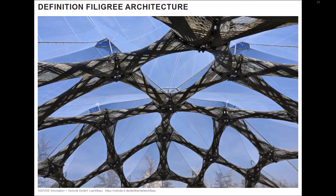The word filigree originally comes from Latin and is composed of the words filum and granum, literally translated as grain wire. In a figurative sense, the term filigree describes a goldsmith's work, which consists of a fine mesh of wire made of gold and silver. In architecture, filigree is not a firmly defined but a compound term that tries to describe a certain type of construction that could also be described as delicate or light.